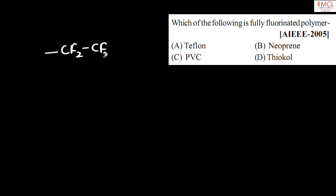The formula of Teflon is -(CF₂-CF₂)ₙ-. In this compound, four fluorine atoms are present, which is why Teflon is a fully fluorinated polymer. Therefore, option A is correct.